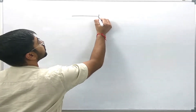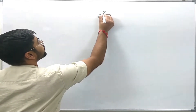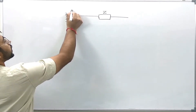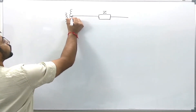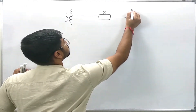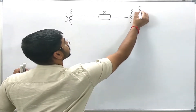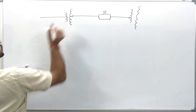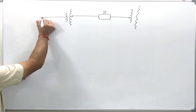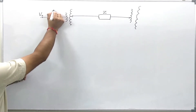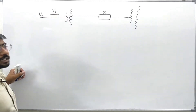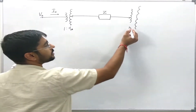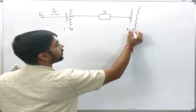This is a transmission line with an impedance Z and it is having tap changing transformers at its both ends. This is the sending end and the voltage is Vs, the current is Is. The tap changing transformer at the sending end has an off-nominal tap ratio of 1 to Ts, and the transformer at the receiving end has off-nominal tap ratio Tr to 1.